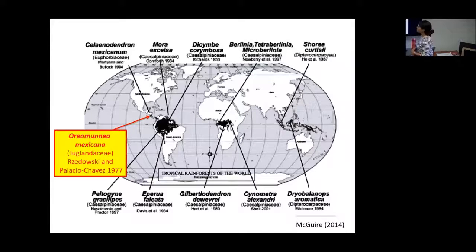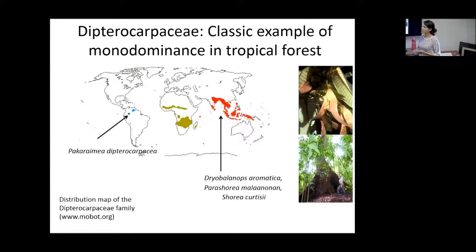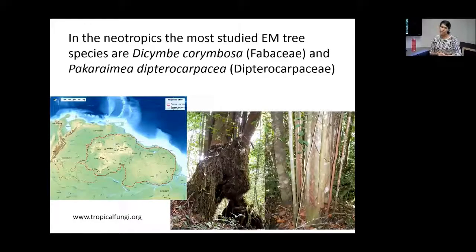These are all the species that have been reported as tropical monodominants, and we're going to focus on Oremunia mexicana, found mostly in Central America. The classical example of monodominance in tropical forests is the Dipterocarpaceae family, which forms monodominant stands mostly in Southeast Asia. But in the Neotropics, there are also some monodominant species that have been well studied, like Dicymbe rosacea and Peltogyne gracilipes, both in the Guiana Shield.